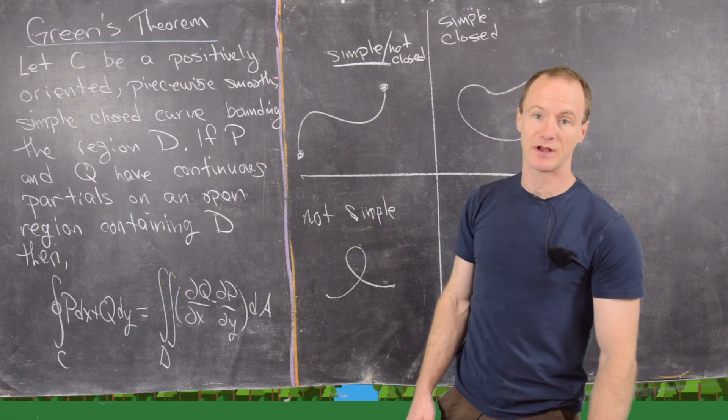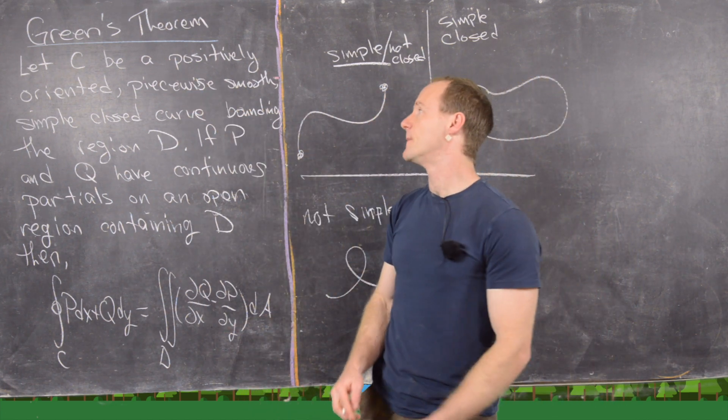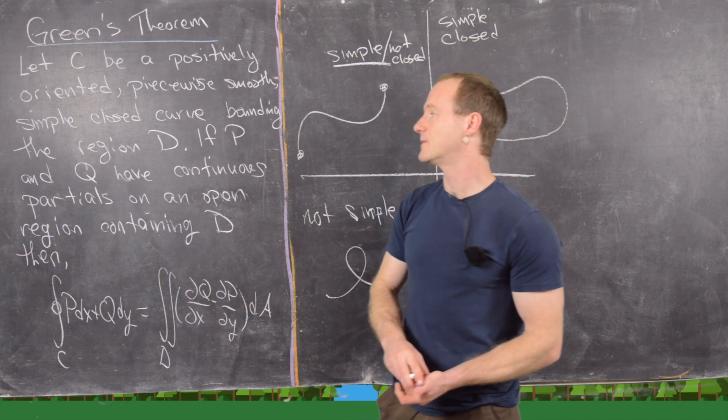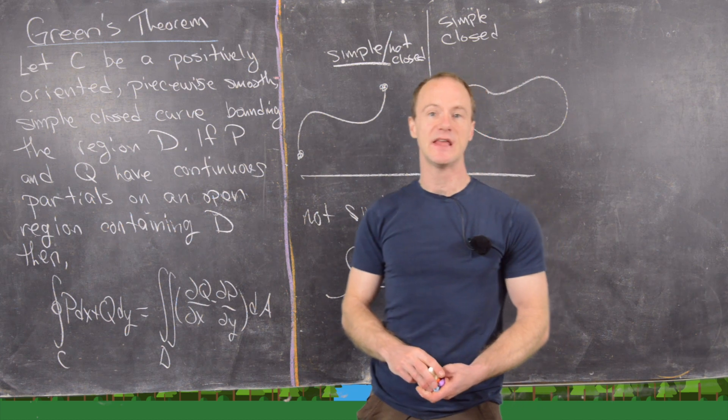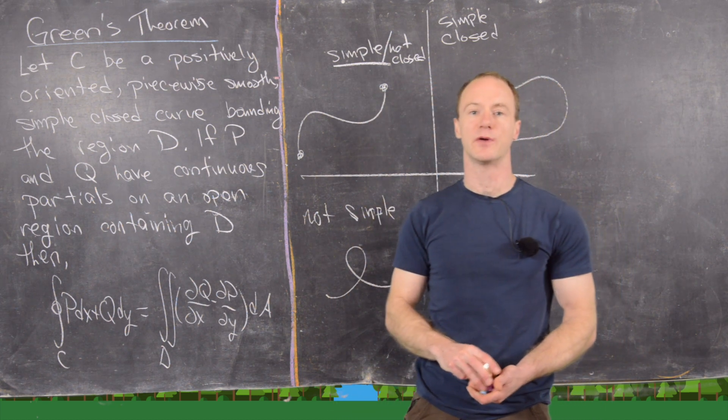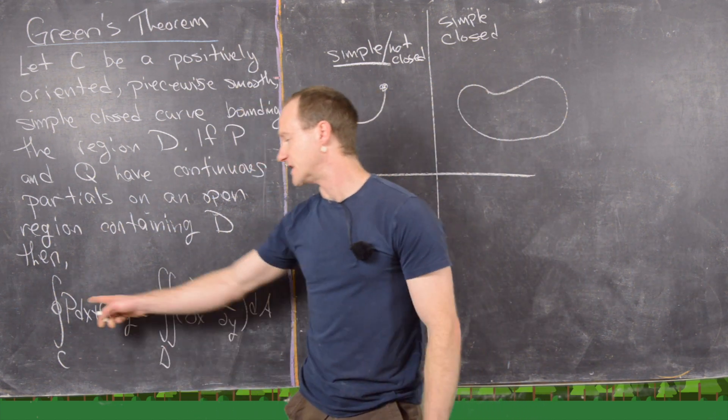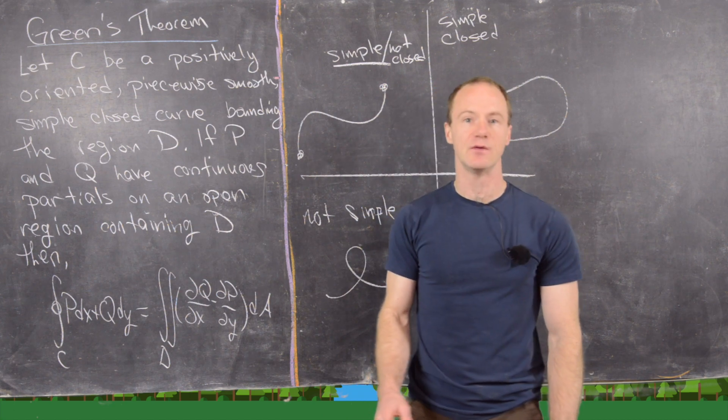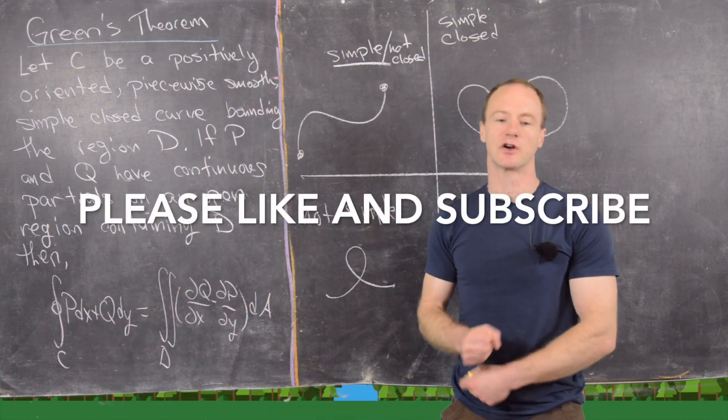So the statement goes like this. Let C be a positively oriented piecewise smooth simple closed curve bounding the region D. If P and Q have continuous partial derivatives on an open region containing D, then this line integral over C of P dx plus Q dy, and notice I've put a little loop here, that's because C is a closed curve.